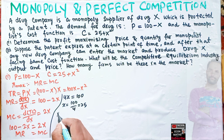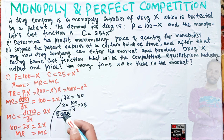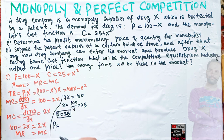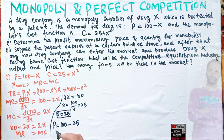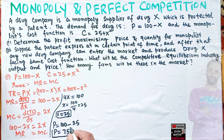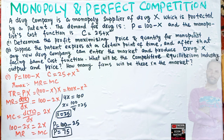Now let us find the price. We plug x = 25 into the inverse demand function: p = 100 - 25 = 75. So the price charged by the monopolist for drug X is 75, and the monopolist produces only 25 units. That covers the monopolist's solution.